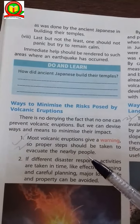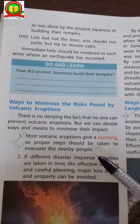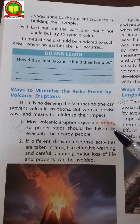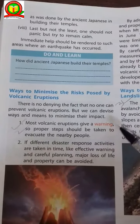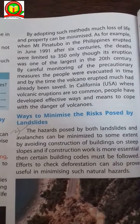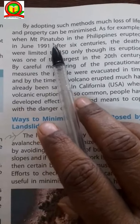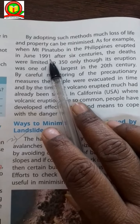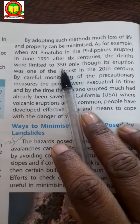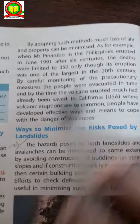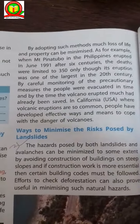Ways to minimize the risk posed by volcanic eruptions: most volcanic eruptions give a warning, so proper steps should be taken. If different disaster response activities are taken in time — like effective warning and careful planning — much loss of life and property can be minimized. For example, when Mount Pinatubo in the Philippines erupted in June 1991 after 6 centuries, the deaths were limited to 350 only, though its eruption was one of the largest in the 20th century, due to careful monitoring and precautionary measures.